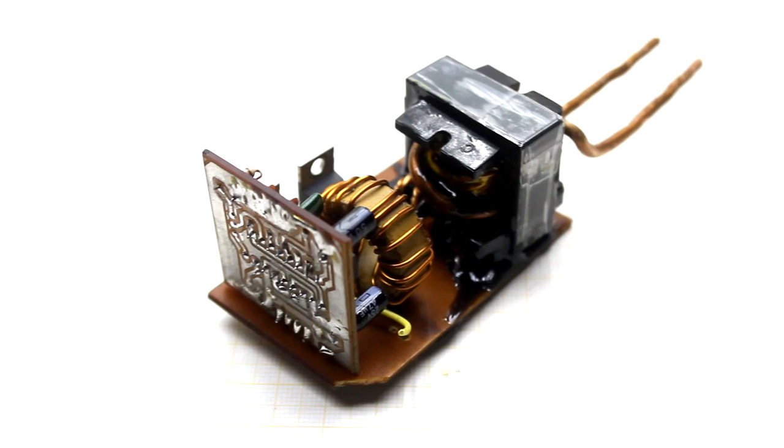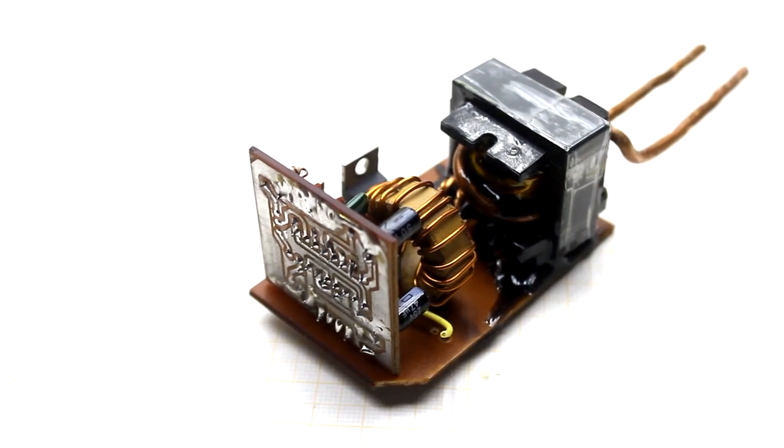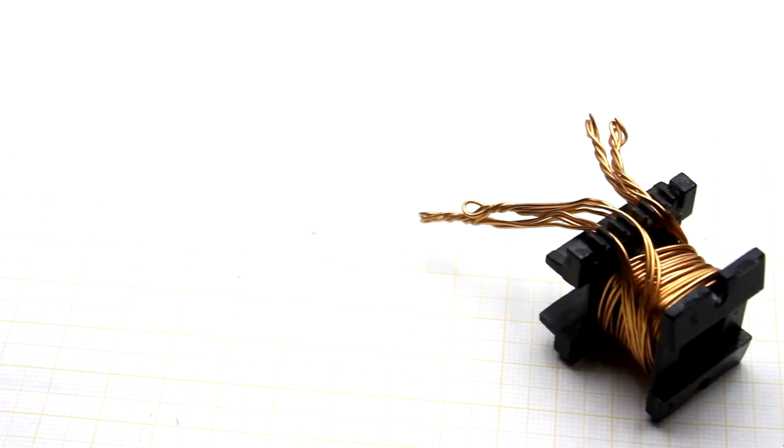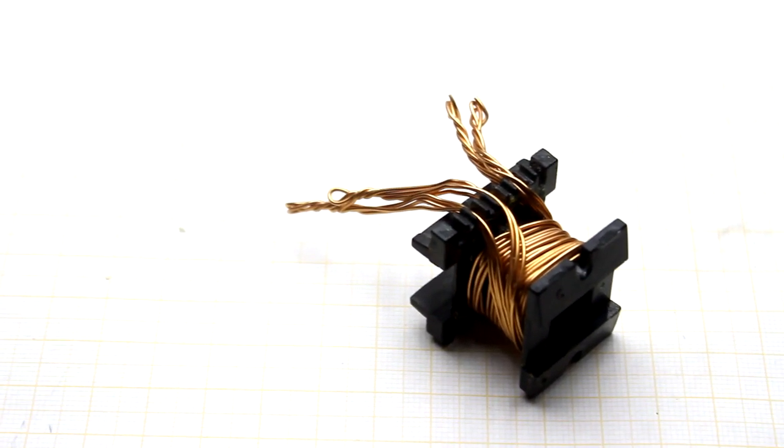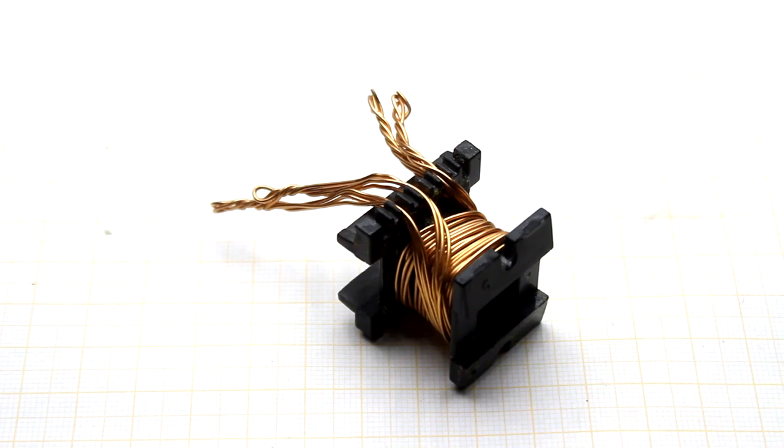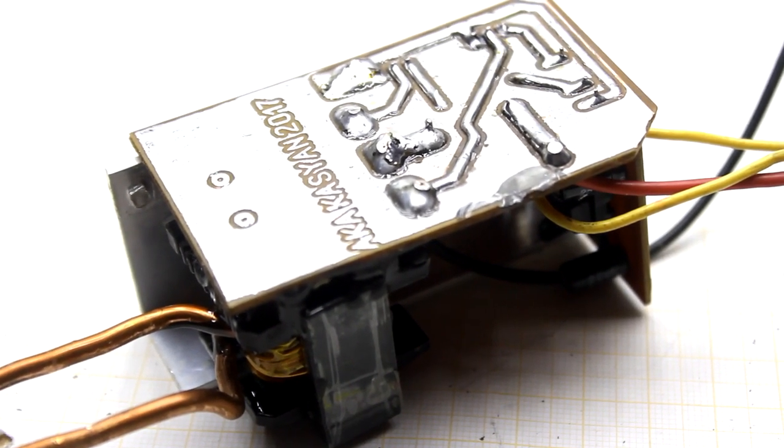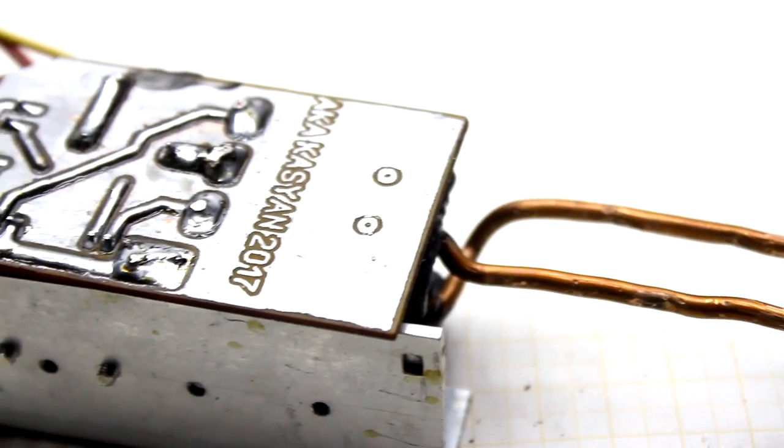I must say, there will be two videos devoted to this topic. Today we will consider the circuit and principle of operation. In the second video, we will completely assemble the device. In the description you will find references to components for assembling such a soldering iron and a complete archive with the circuit and printed circuit board.